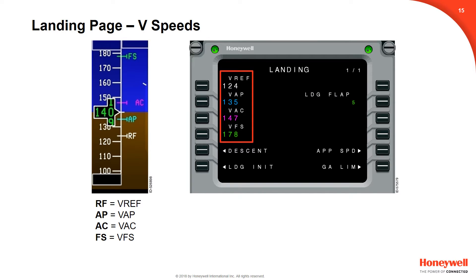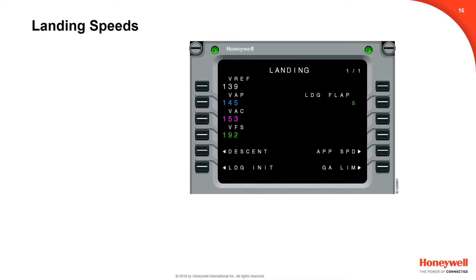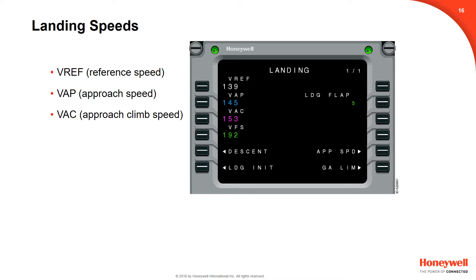The landing page permits the entry of various landing V speeds that are used to place speed targets directly onto the PFD airspeed tape. If landing speeds are not inserted or confirmed and the aircraft is in cruise with an arrival activated, a check landing speeds scratch pad message will be displayed. Landing speeds consist of reference speed, approach speed, approach climb speed, and final segment speed. The landing speeds are confirmed and activated by the crew by selecting line select keys 1 left through 4 left. Note that this confirming action must be completed for speeds to post on the airspeed tape.